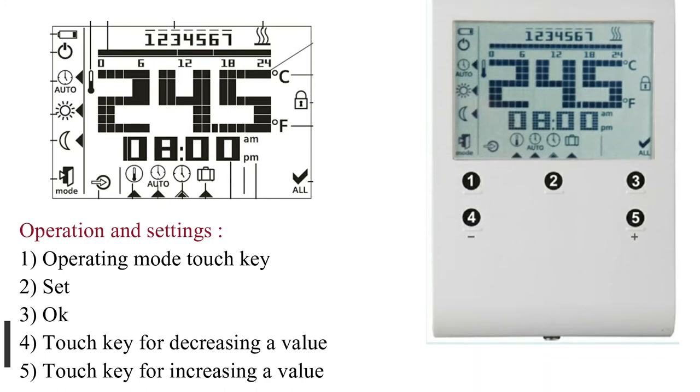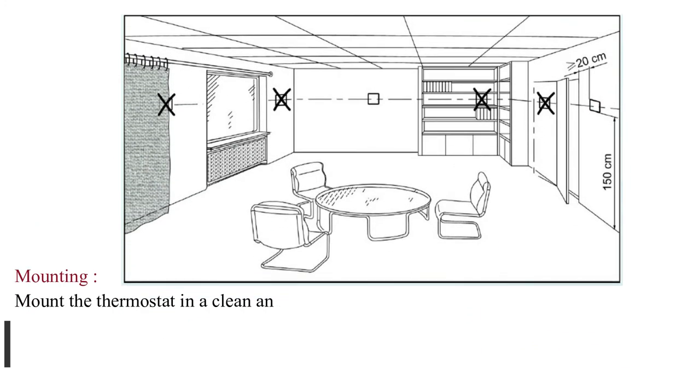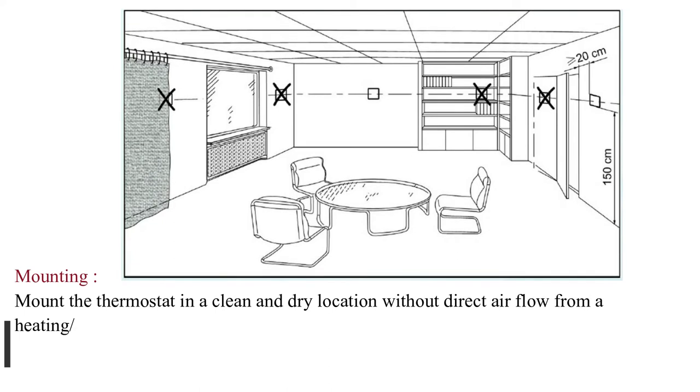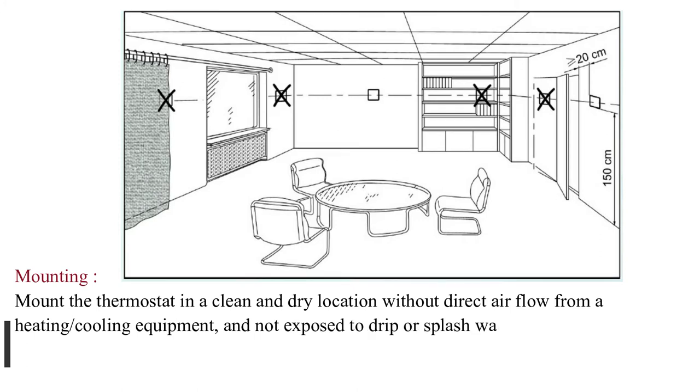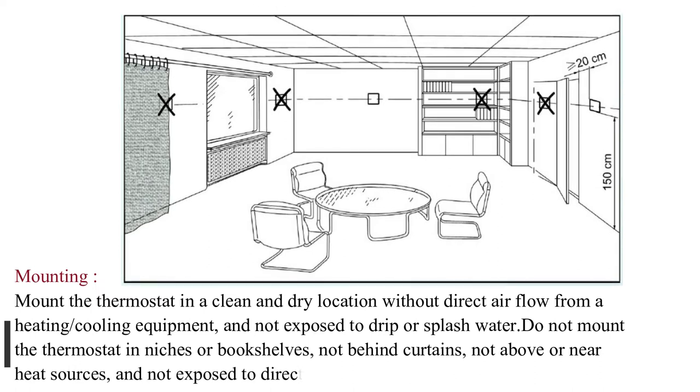Mounting: Mount the thermostat in a clean and dry location without direct airflow from heating or cooling equipment, and not exposed to drip or splash water. Do not mount in niches or bookshelves, not behind curtains, not above or near heat sources, and not exposed to direct solar radiation. Mount about 1.5 meters above the floor.